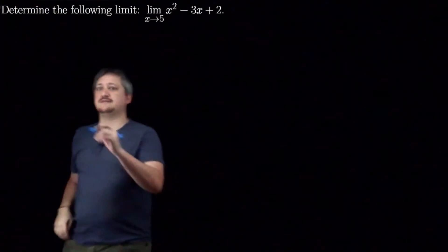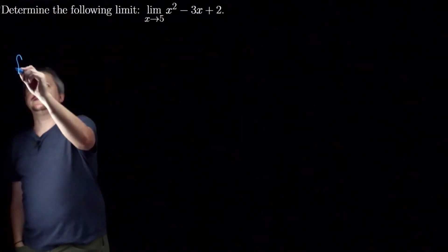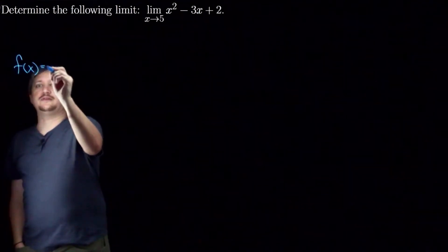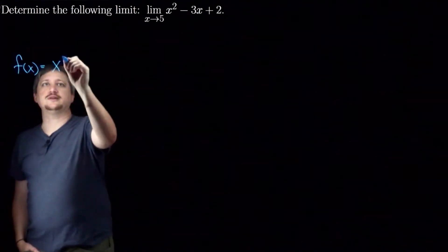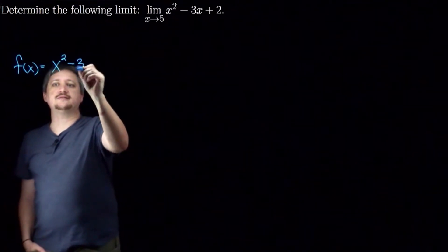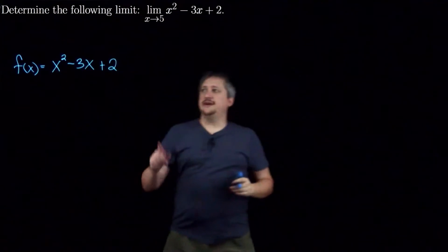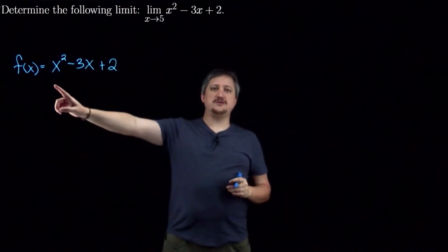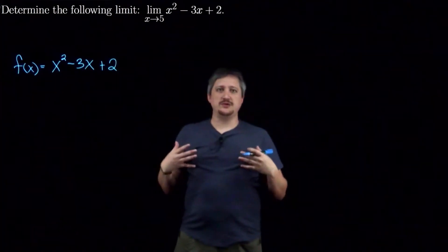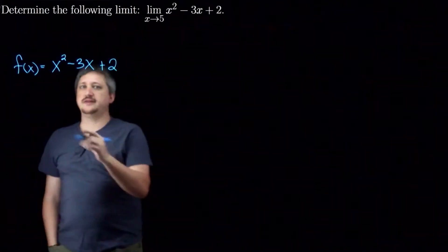this is going to just go exactly where we expect it to for a continuous function. That means, in other words, if we have f of x, if we think of this as a function x squared minus 3x plus 2, then if we want the limit as x goes to 5 of this function, it's going to be just f of that limit.